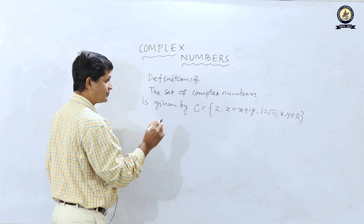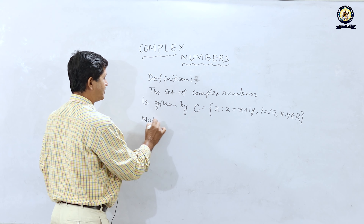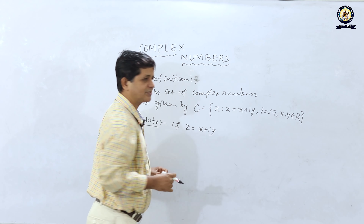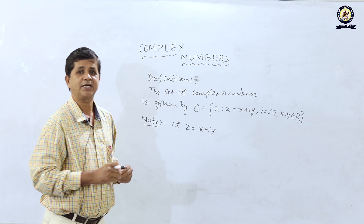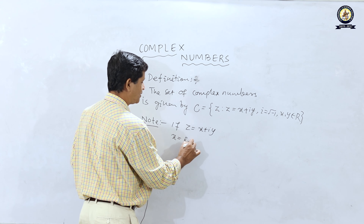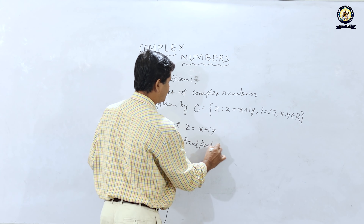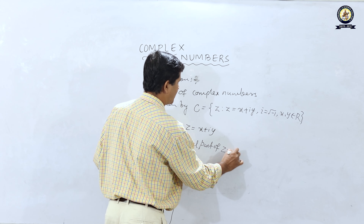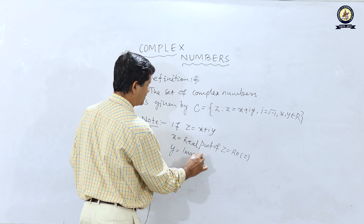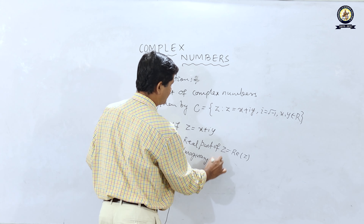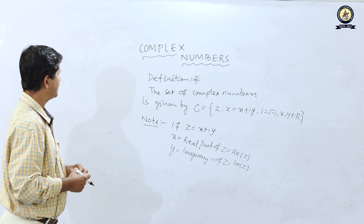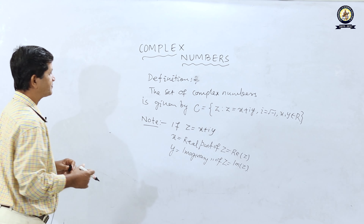If z is equal to x plus i y, then x is called the real part of z, written as Re(z), and y is called the imaginary part of z, written as Im(z).